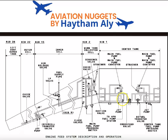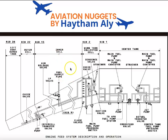The engine fuel feed gallery is divided into two main independent galleries: the left-hand gallery and the right-hand gallery. What divides these two galleries is the cross feed valve. The cross feed valve is operated by two electrical actuators and two electrical motors, and has a visual indicator on the valve body. This cross feed valve is normally closed during normal operation when all pumps and all engines are operating.